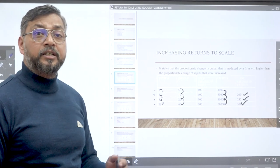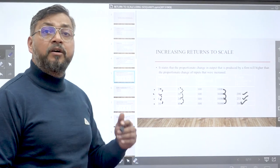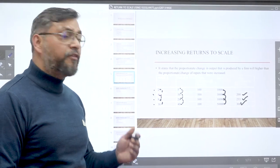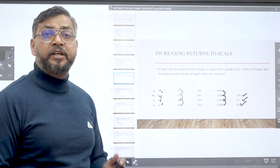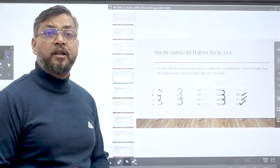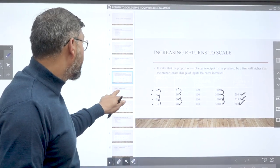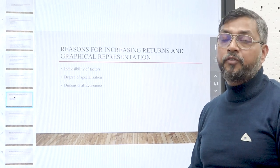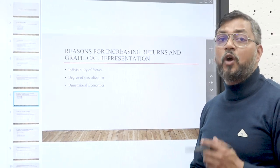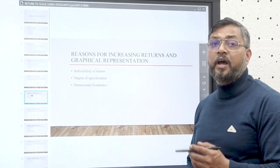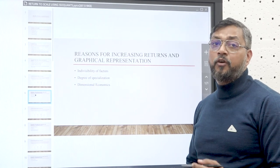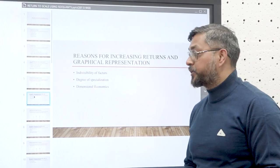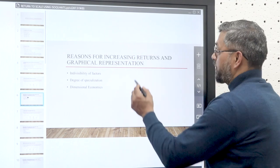Let's now discuss the reasons behind increasing returns to scale and also look at it in a graphical manner using isoquants.